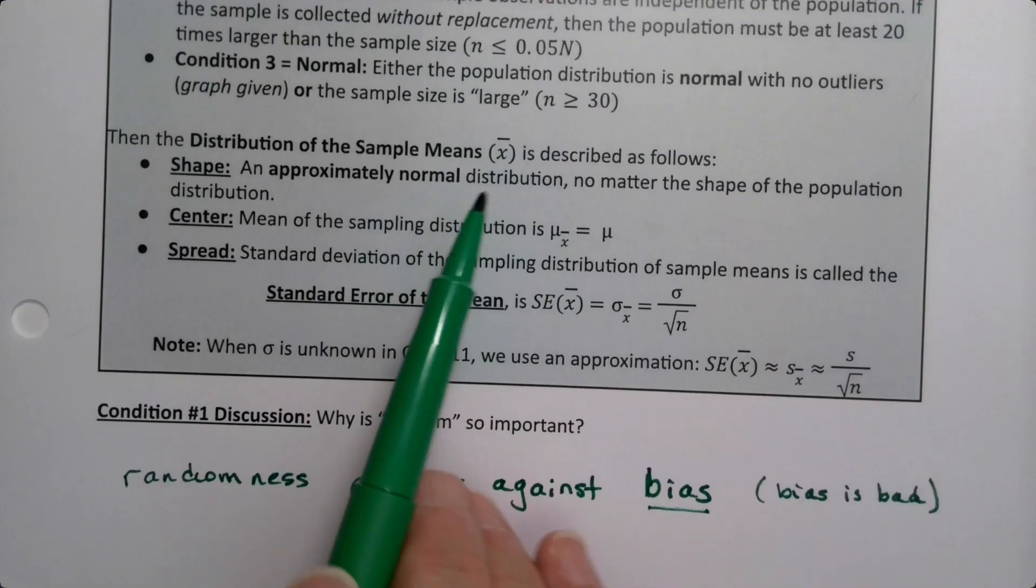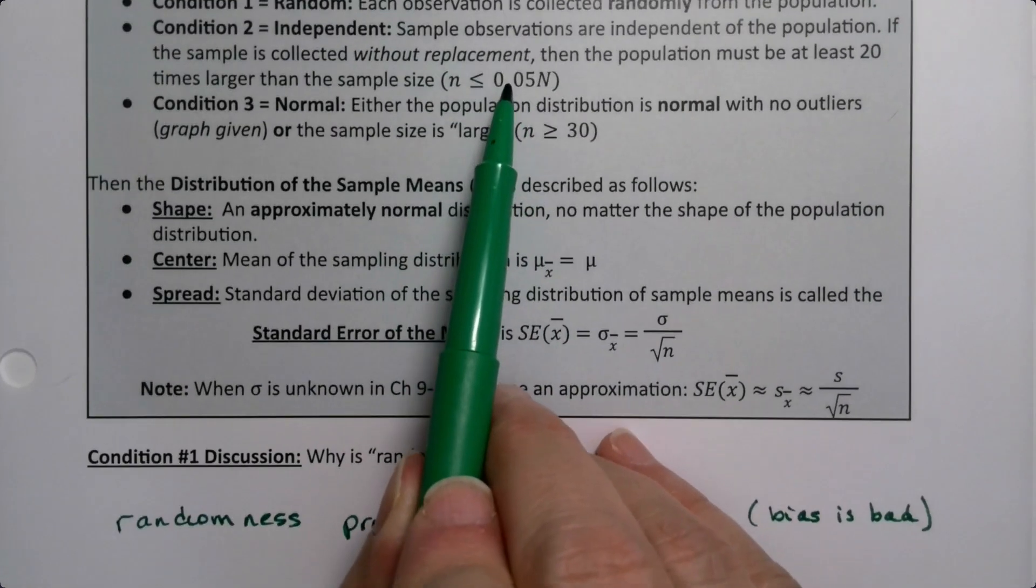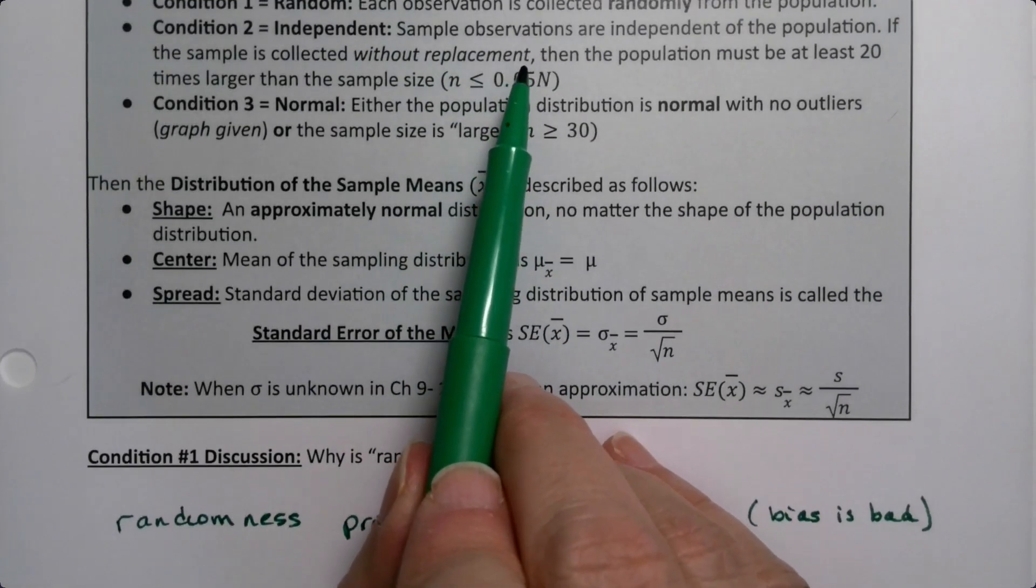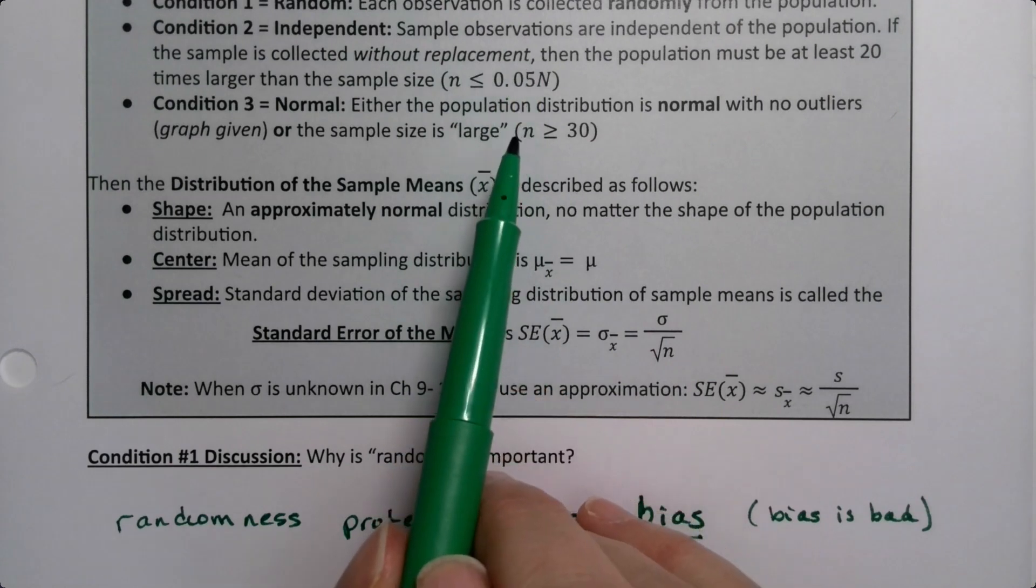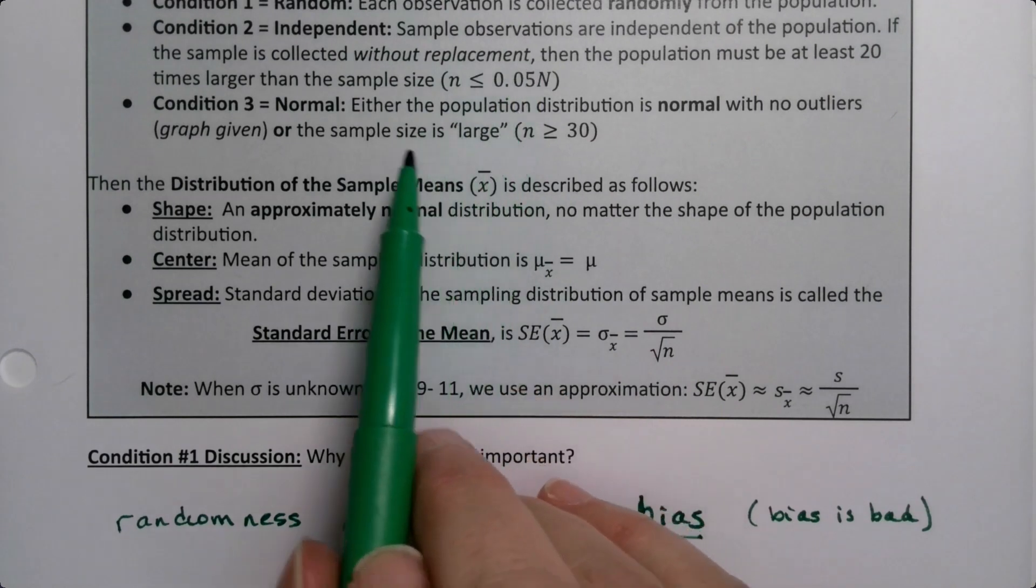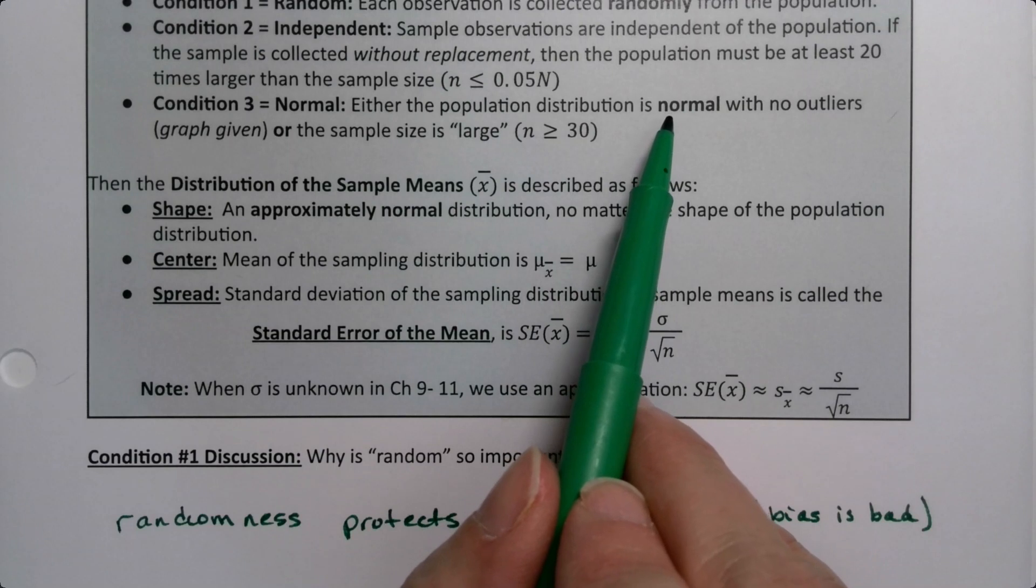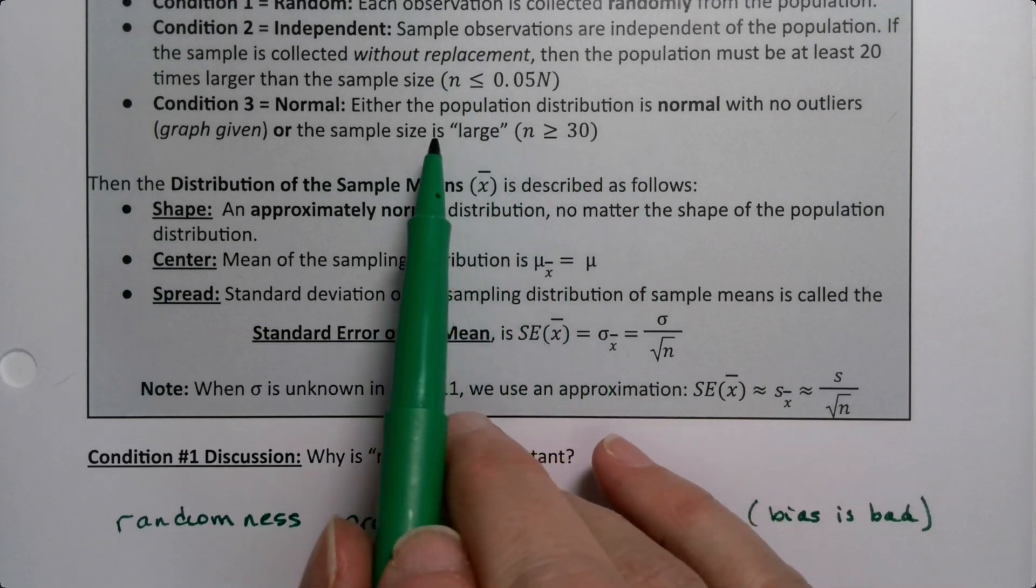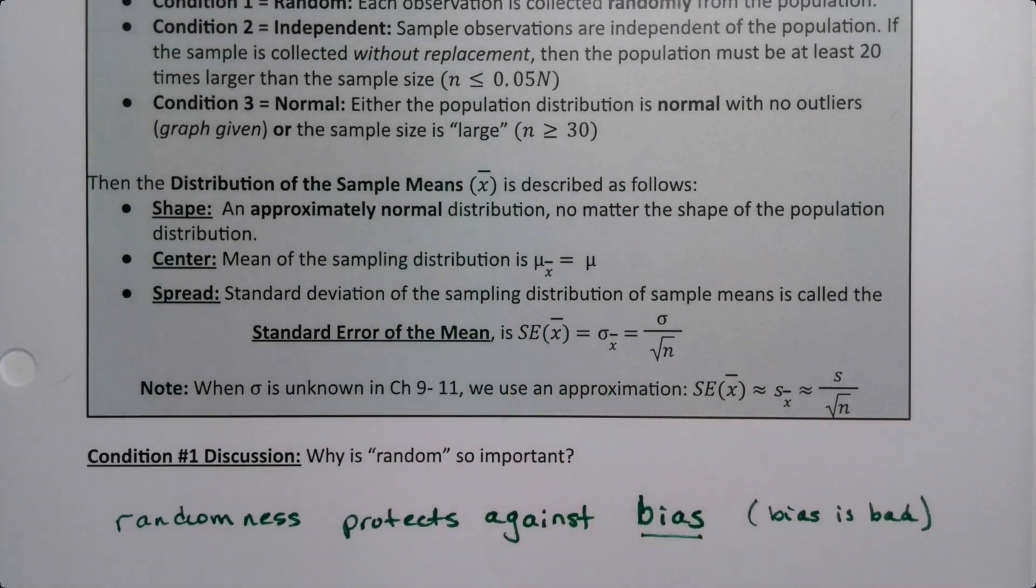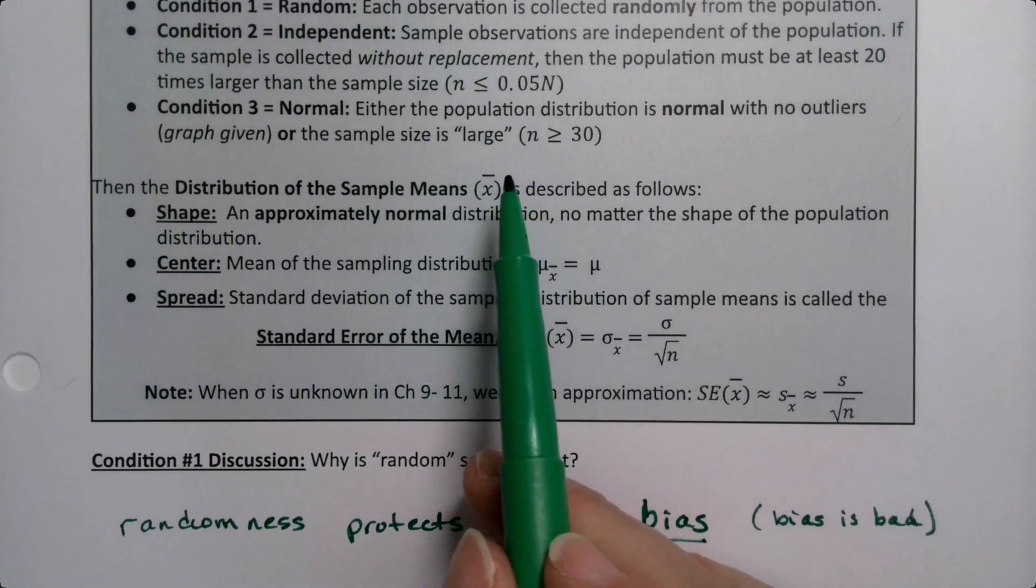So we have this weird tension between this one, where we want to take a small sample when we're doing it without replacement, and this one - because we want the sample to be large enough that it's normal. Now, if the population's normal to begin with, you can have any sample size you like. You can have sample size two, no problem. But if the population's skewed, then you need your sample size to be large, or if you don't know what it is, you need your sample size to be large.